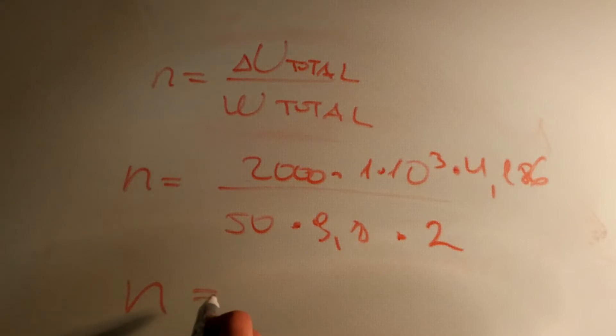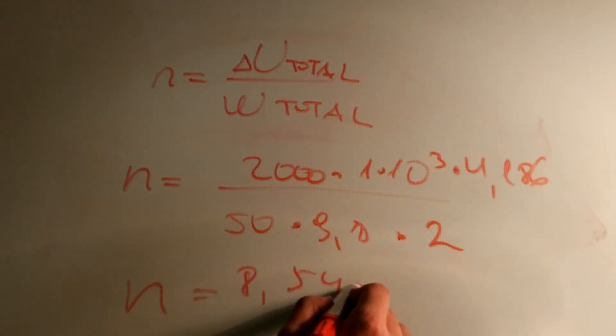So basically if we calculate this we will get 8.54 times 10 to the power of 5 times.